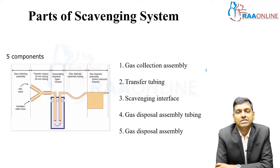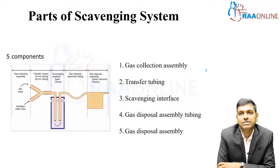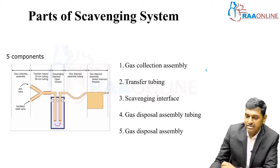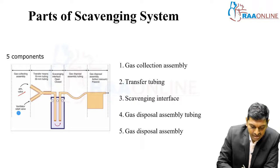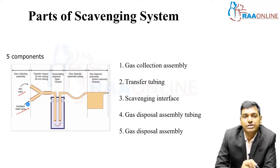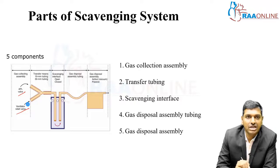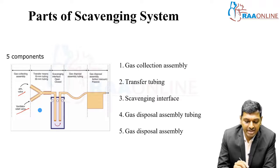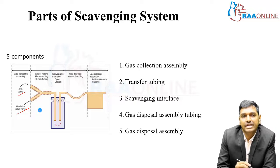Coming to the parts of the scavenging system, it mainly consists of five components. First is the gas collection assembly, which gets the outlet from the APL valve and the ventilator relief valve. This is where the gases enter the scavenging system. It transfers the gases to the scavenging interface through transfer tubing, which can be 19 mm or 30 mm — standard sizes through which gases flow into the scavenging interface.